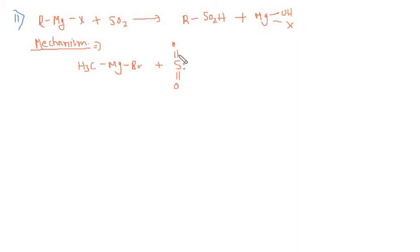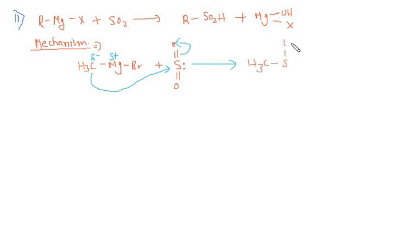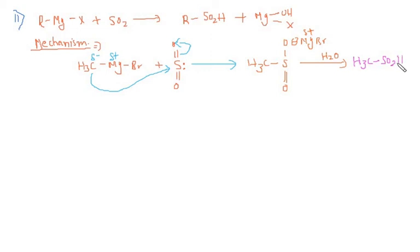Sulphur dioxide has a lone pair as well. This methyl group is having a negative charge and magnesium has a positive charge. So the methyl attacks the sulphur and the electron pair gets shifted to oxygen. Further we are having CH3SO- with a double bond. MgBr gets attached to this since it is positive in nature, and on further hydrolysis it releases the product CH3SO2H plus MgBrOH.